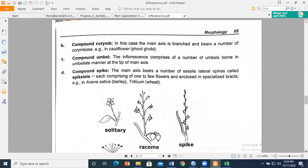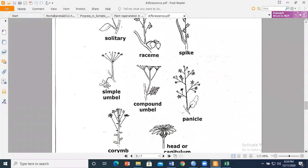Compound umbel: the inflorescence comprises a number of umbels born in an umbellate manner at the tip of the main axis. Compound spike: in the main axis, there are a number of sessile lateral spikes called spikelets, each comprising one to two flowers enclosed in specialized bracts. Examples include oats, wheat, millet, and other grasses.